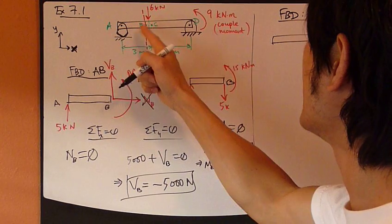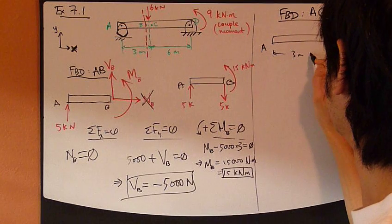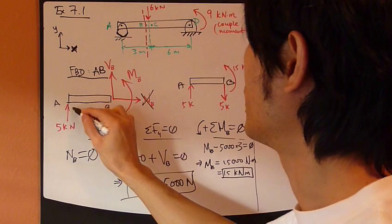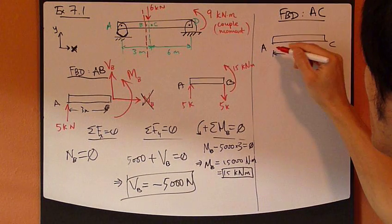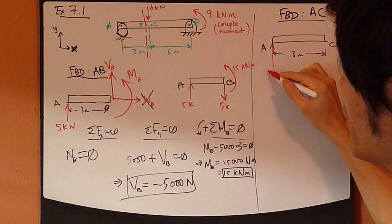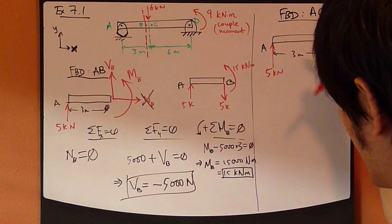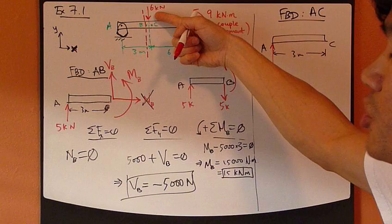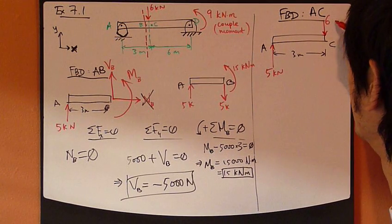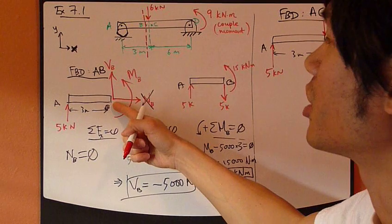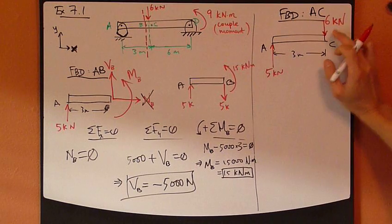Except now you draw a free body diagram for AC section. Since A, B and A, C are almost the same length, the length AC I'm going to take it at 3 meters as well, just like AB. Except now for the free body diagram, this AC section now I have to take into consideration the 6,000 newtons because C is just to the right of it. So 6,000 newtons actually appears here in this free body diagram where it doesn't appear in this AB diagram because it's outside of this section. So 6,000 newtons now is included in this section AC.